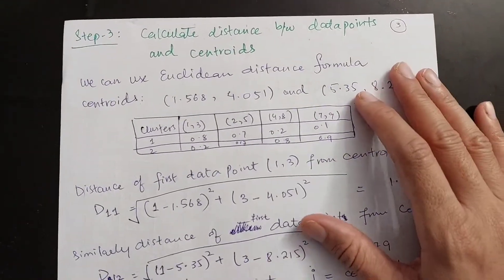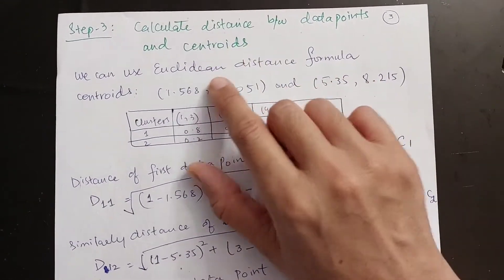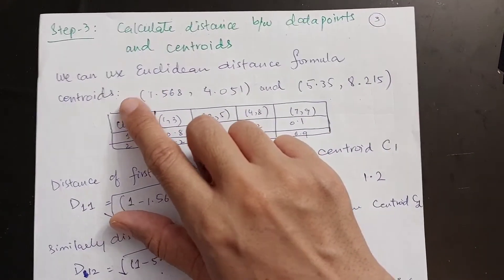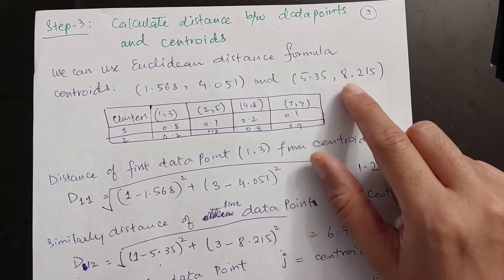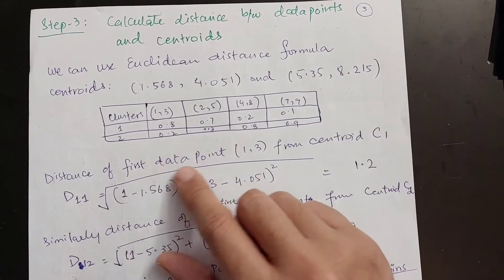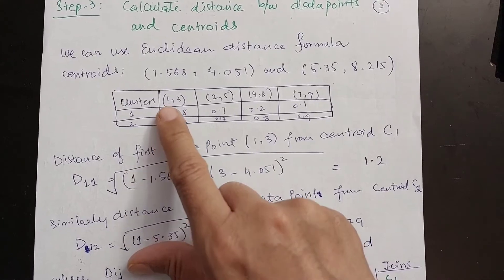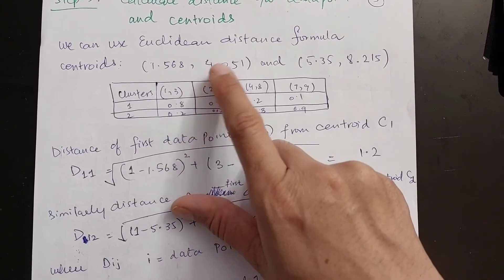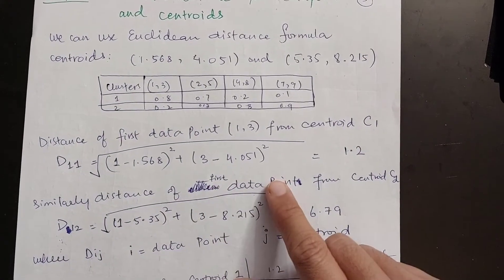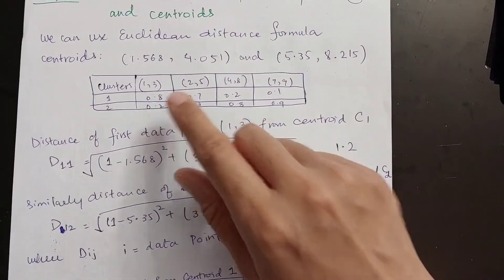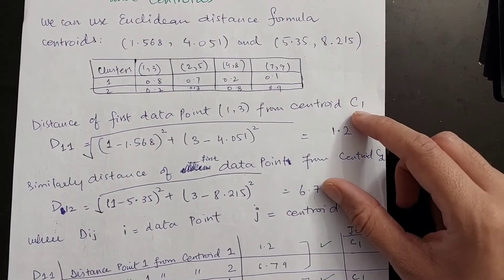Once the centroid values have been calculated, we calculate the distance between the data points and the centroids using the Euclidean distance formula. The centroids are C1 = (1.568, 4.05) and C2 = (5.35, 8.215). The distance of the first data point (1,3) from centroid C1 uses (1 − 1.5) and (3 − 4.05), and from centroid C2 uses (1 − 5.35) and (3 − 8.215). Here Dij refers to data point i and centroid j.